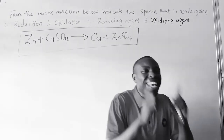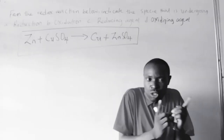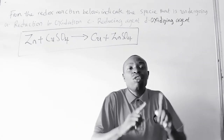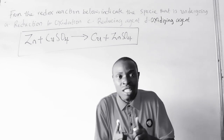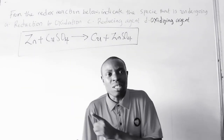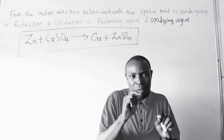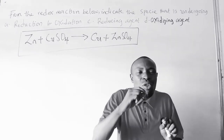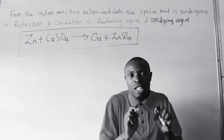In the case of oxidation, it is the opposite of reduction. Remember that in a redox reaction, it is a simultaneous process — one species is undergoing reduction while another is undergoing oxidation. Oxidation is the loss of electrons and also an increase in oxidation number.